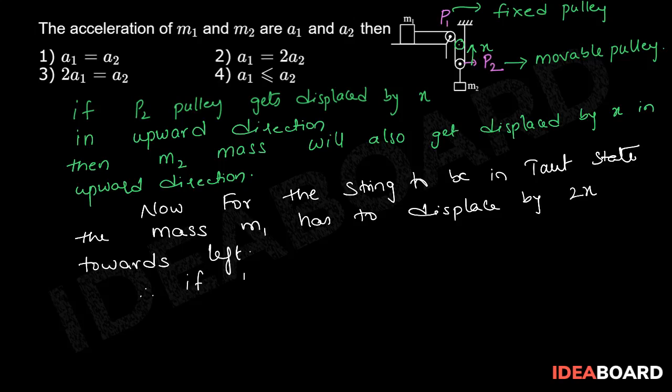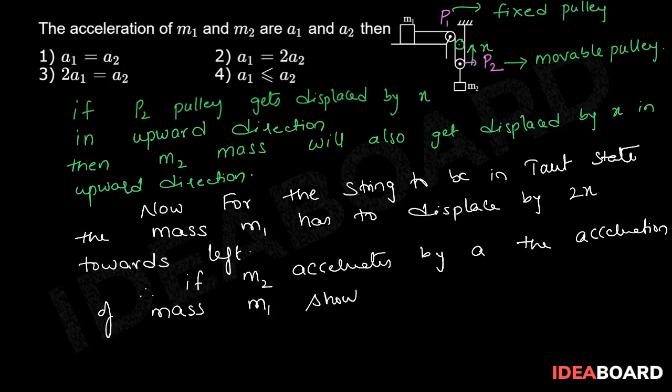Therefore, if M2 accelerates by A, the acceleration of mass M1 should be 2A. We conclude that the acceleration of M1, which is given as A1, is equal to 2 times the acceleration of M2 mass, which is given as A2. Therefore, the correct option is 2.